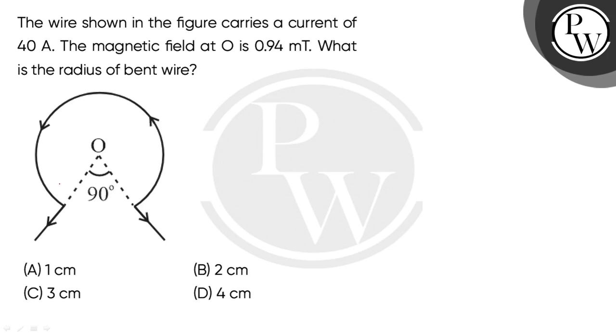In this figure, the wire is shown in the form of a circular arc. We're given the magnetic field at the center, and we need to find the radius of the bent wire.